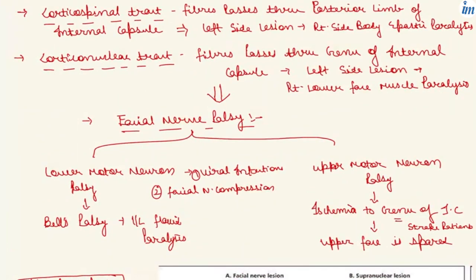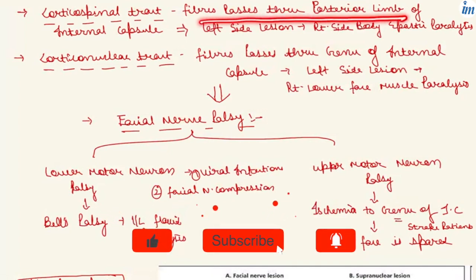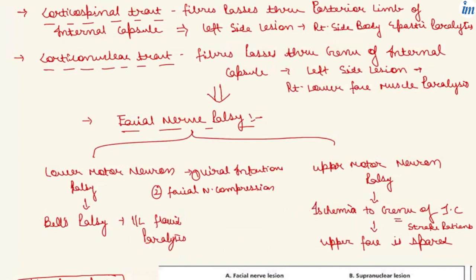Regarding the descending tracts in the spinal cord: the corticospinal tract fibers always pass through the posterior limb of the internal capsule. But in the corticonuclear tract, the fibers pass through the genu of the internal capsule. The reason for noting where these fibers pass is important for understanding facial nerve palsy.